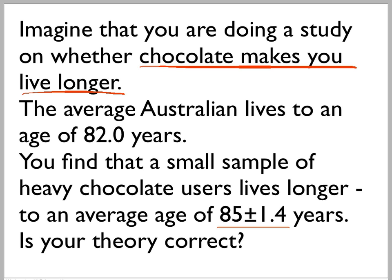So we have a hypothesis, chocolate makes you live longer, and we have some data, 85 plus or minus 1.4, which kind of looks like it's correct. But could that just be a fluke due to uncertainties, or have you really got compelling evidence that everyone should go out and eat more chocolate?